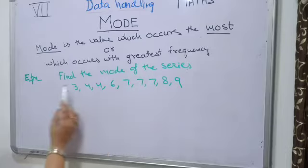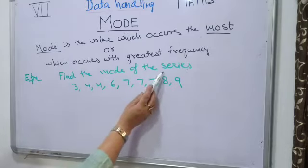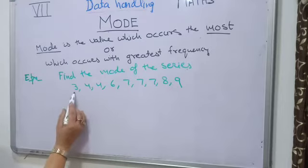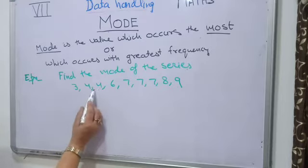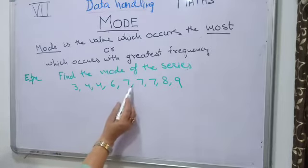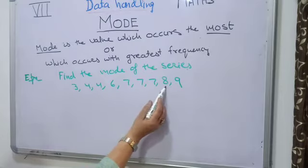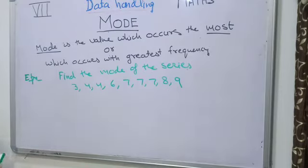Let's understand this by an example. Find the mode of the following series: 3, 4, 4, 6, 7, 7, 7, 8 and 9. Now we can see that in these numbers,